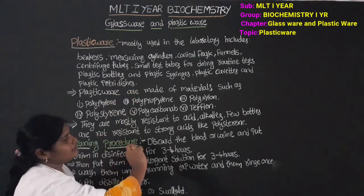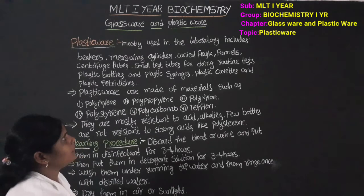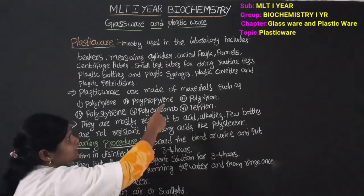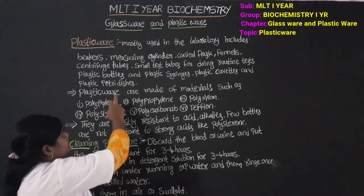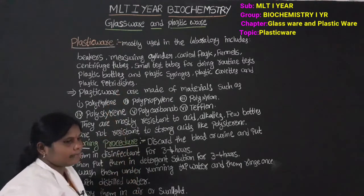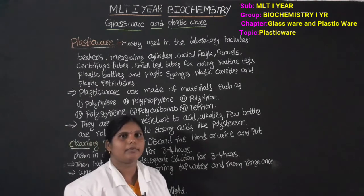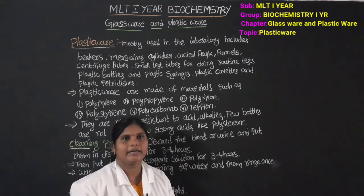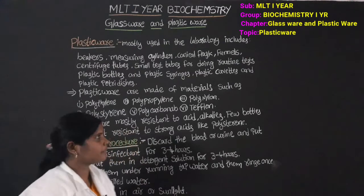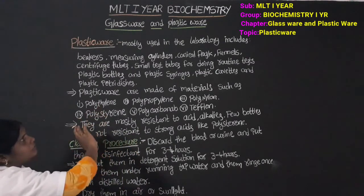Plastic syringes — we use plastic syringes to collect blood samples. Plastic cuvettes — we use cuvettes in the colorimeter for taking readings. Petri dishes — we use petri dishes in the microbiology lab, for culture media and media preparation.